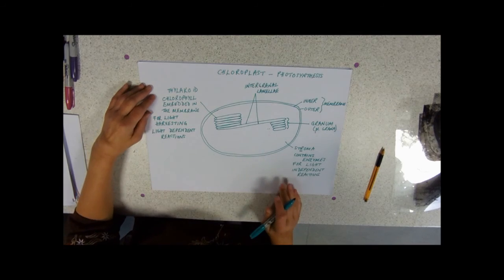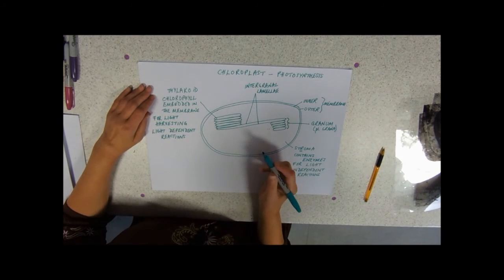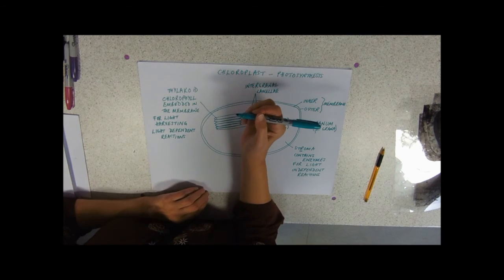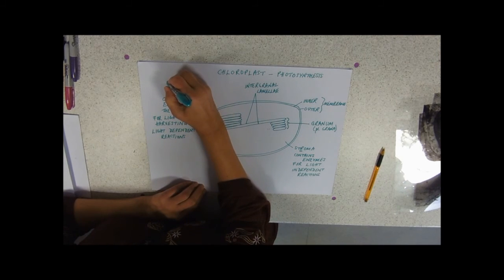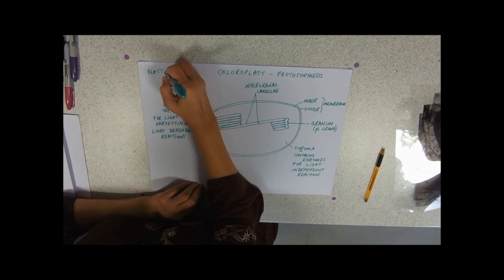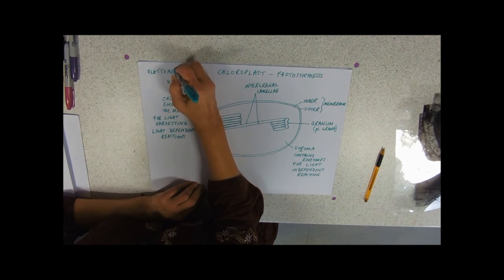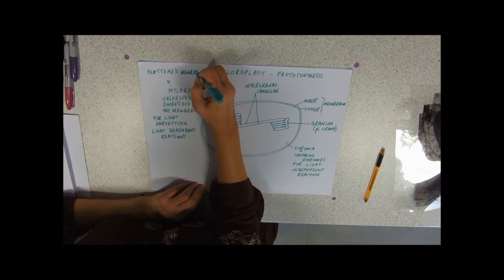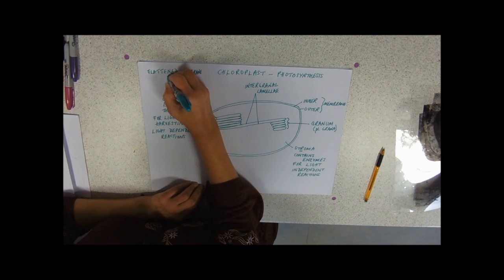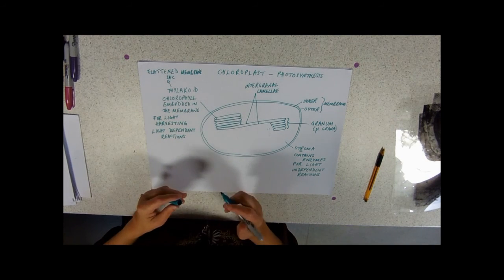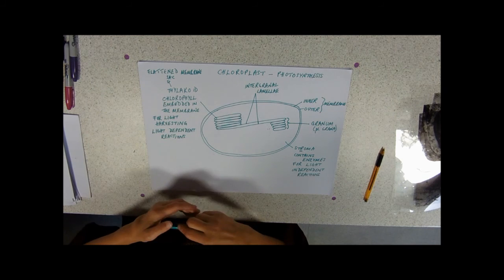So a thylakoid is kind of a flattened membrane sac in structure. So I'm just going to write that in as well. So flattened membrane sac. I suppose a bit like a sort of deflated whoopee cushion. A little bit of a gap in between it.